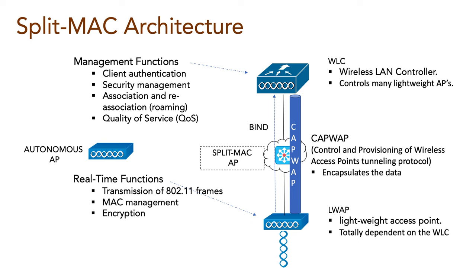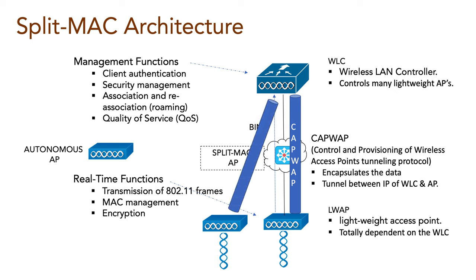The AP and WLC can be located on the same VLAN or IP subnet, or they can be located on two entirely different IP subnets in two entirely different locations. The tunnel exists between the IP address of the WLC and the IP address of the access point, allowing all tunnel packets to be routed at layer 3. As the wireless network grows, the WLC simply builds more CAPWAP tunnels to reach more access points.